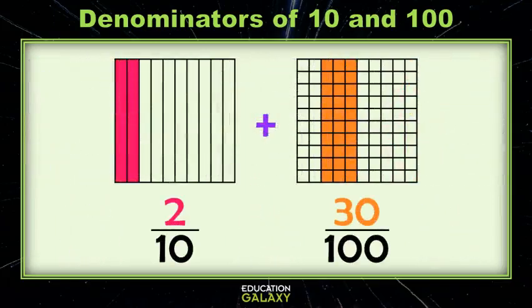So what happens when I have a problem like this, where one of my denominators is 10 and one is a hundred. Now what?